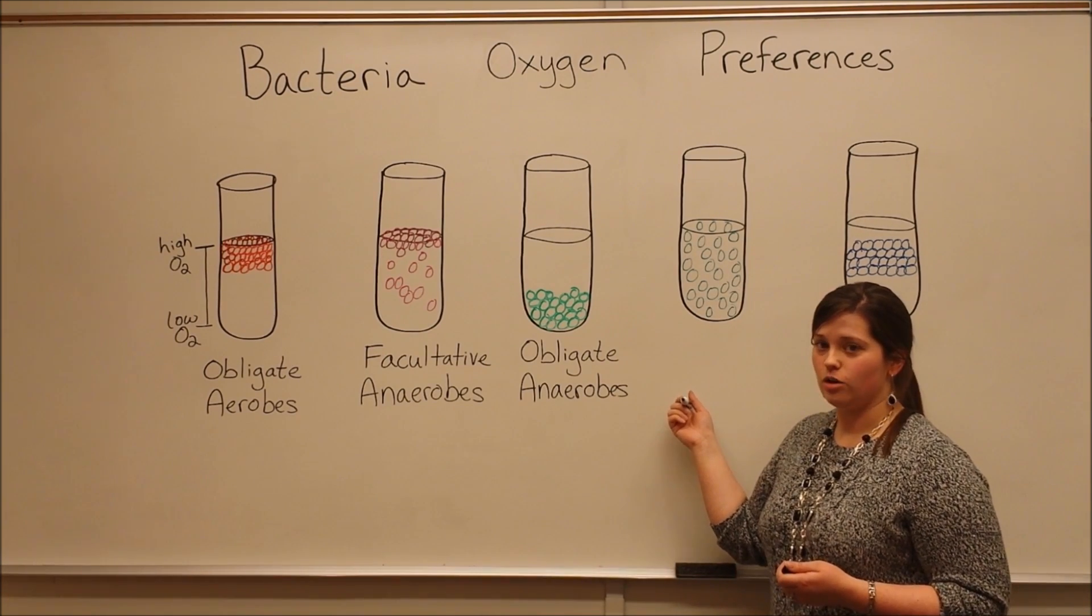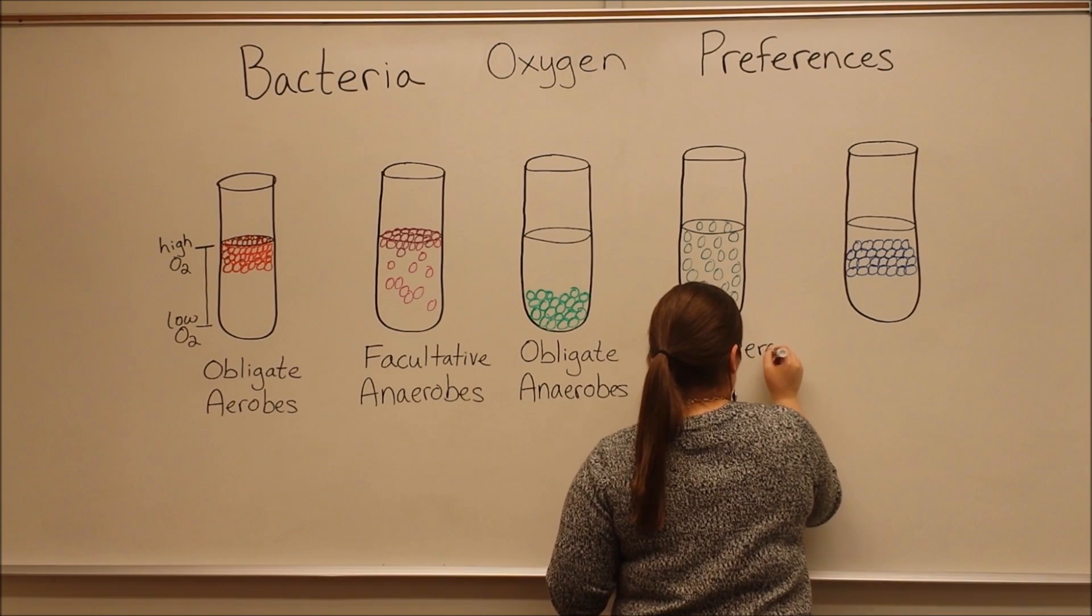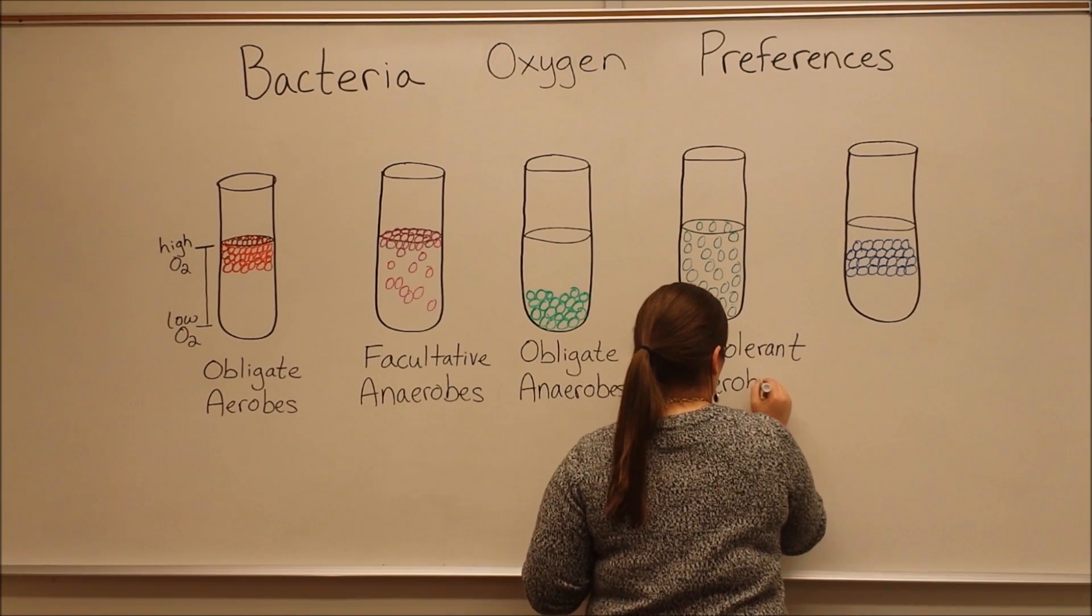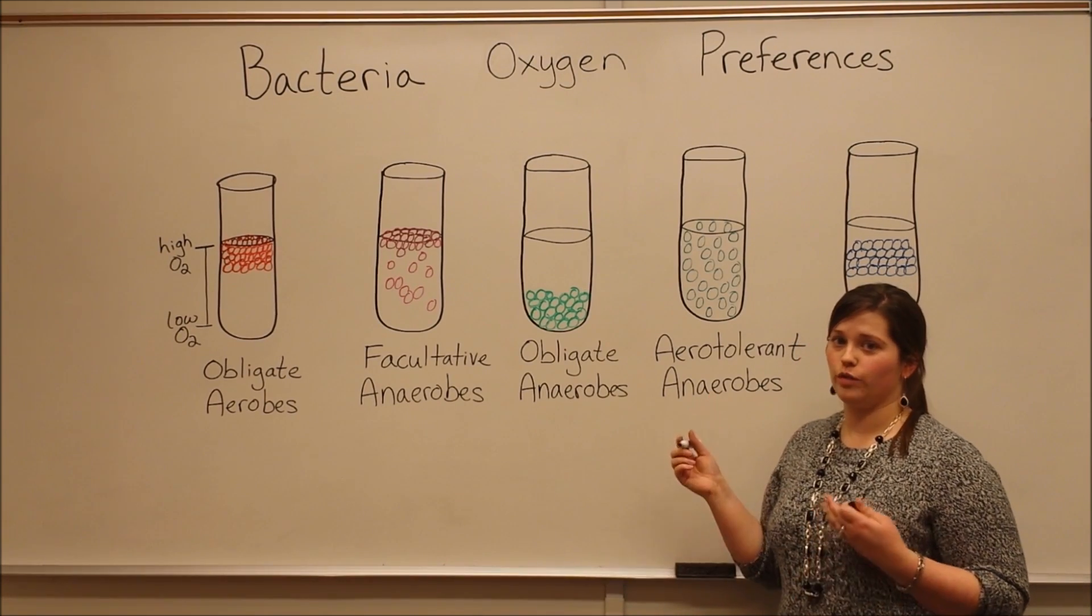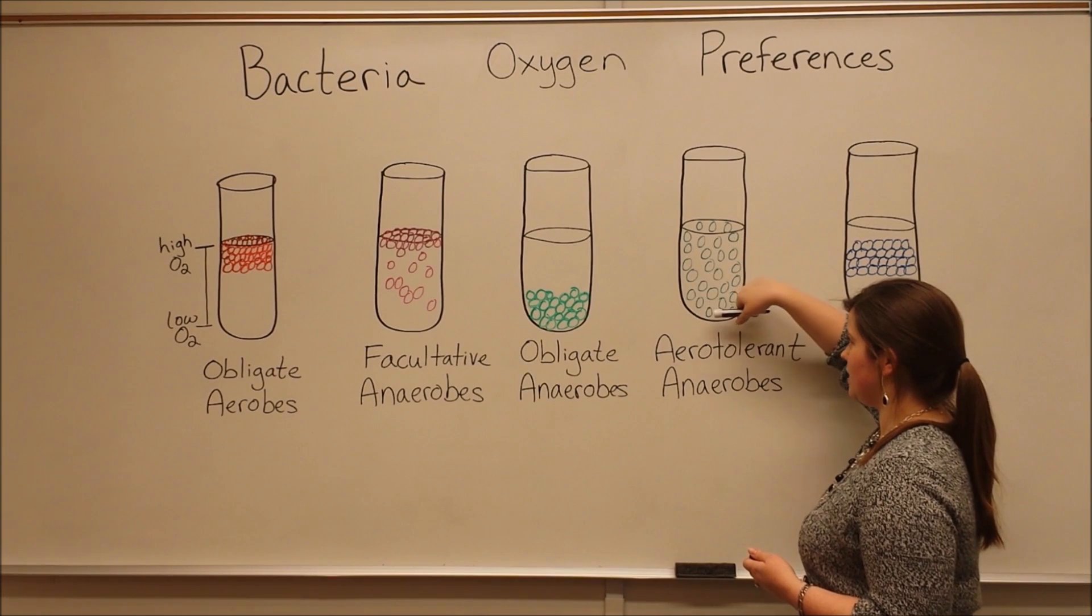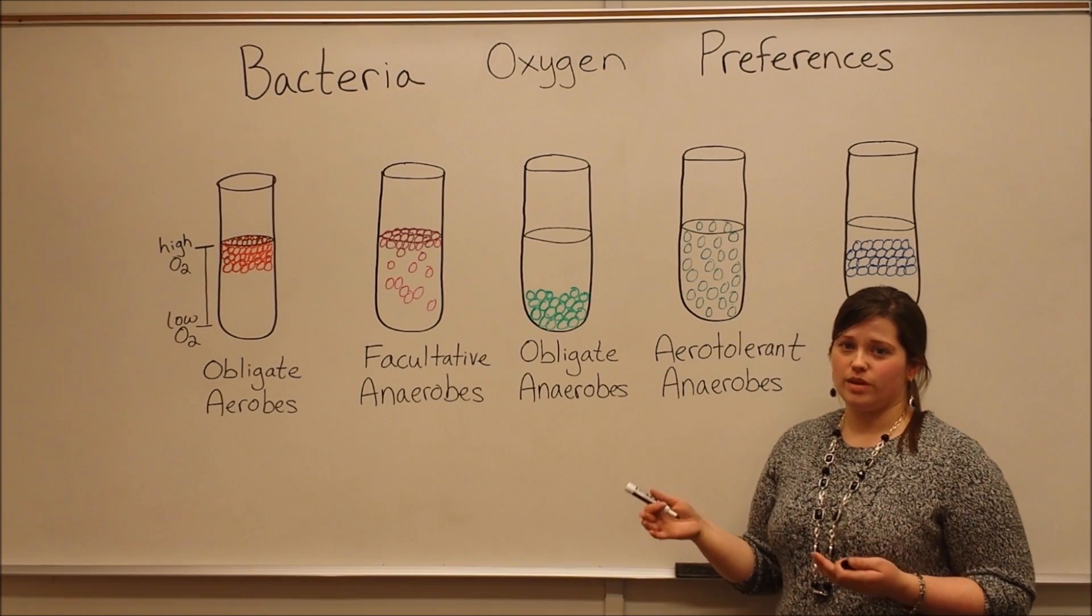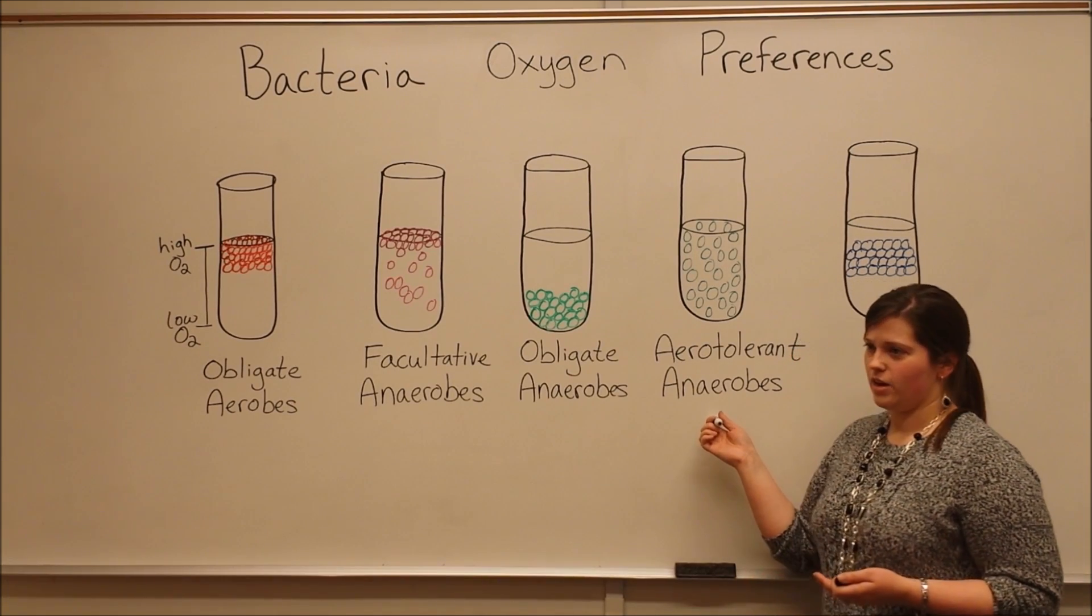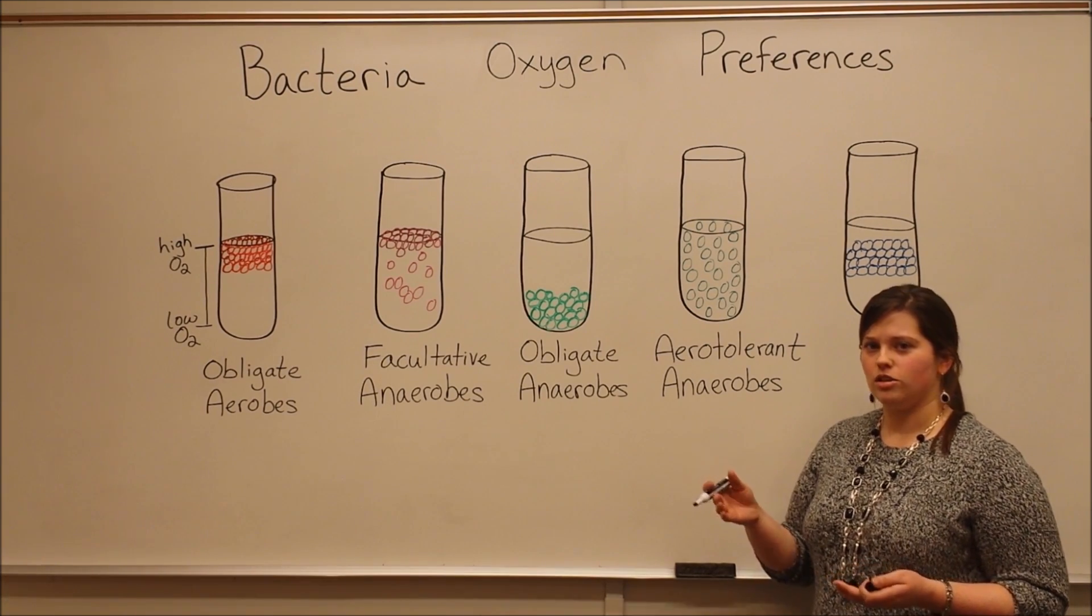We have a class of bacteria called aerotolerant anaerobes. These are bacteria which, by their name, anaerobes, you can see that they don't require oxygen. But they aren't really harmed by it either. That's why in the culture medium, in this test tube, they grow throughout. They're able to grow at the top, in the middle, and at the bottom. And they do so evenly, because while they don't actually use the oxygen, it's not toxic to them either. An example of an aerotolerant anaerobe are species of Lactobacillus. These are bacteria that live in the human vagina and also in the gastrointestinal tract.